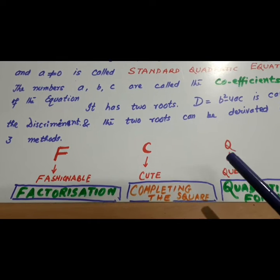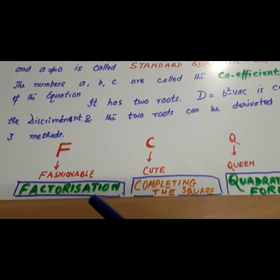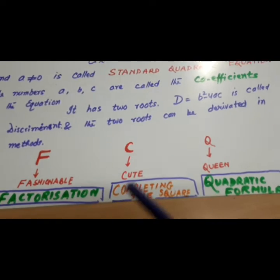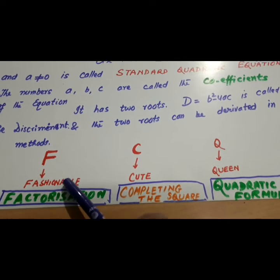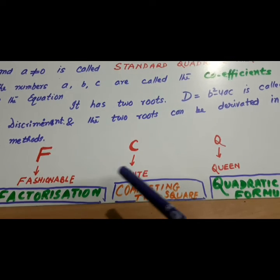F, C, Q. Fashionable cute queen. This is factorization. Completing the square. Quadratic formula. And this is the mnemonic. Three methods are there. Quadratic formula. And this can be remembered like fashionable cute queen.